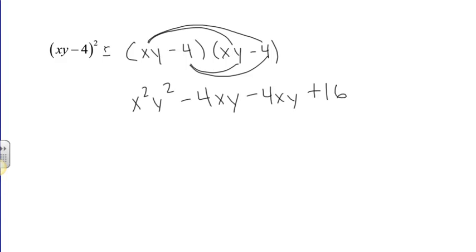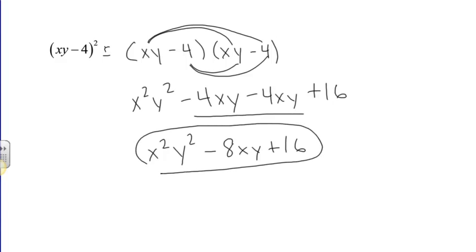Now, combine like terms. Well, this is a like term, x squared, y squared. These two are like terms, negative 4xy and negative 4xy. That's actually going to be negative 8xy. So I'm writing my x squared, y squared minus 8xy and then plus 16. And so those are my terms of the final answer.